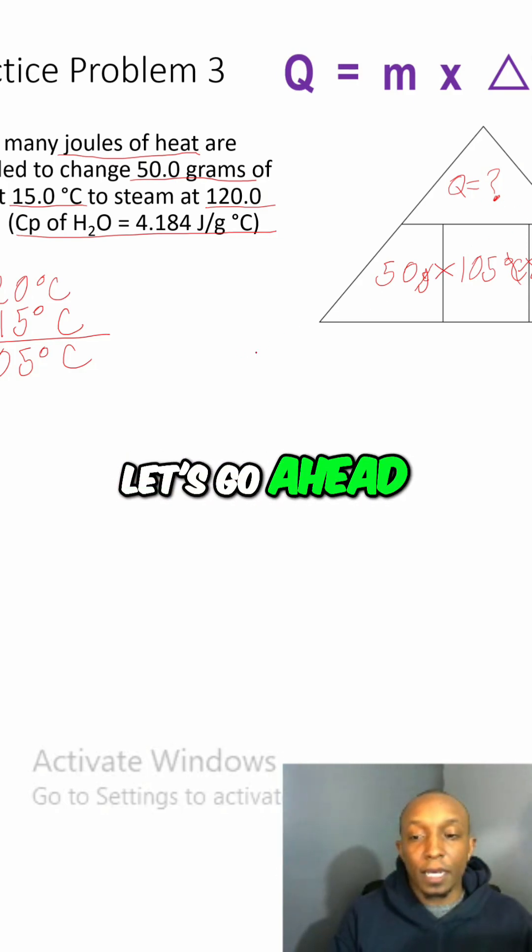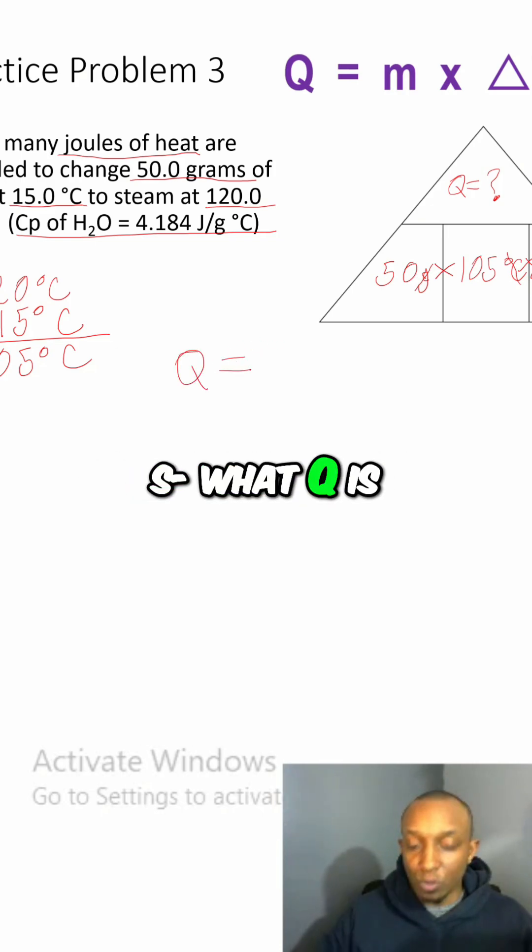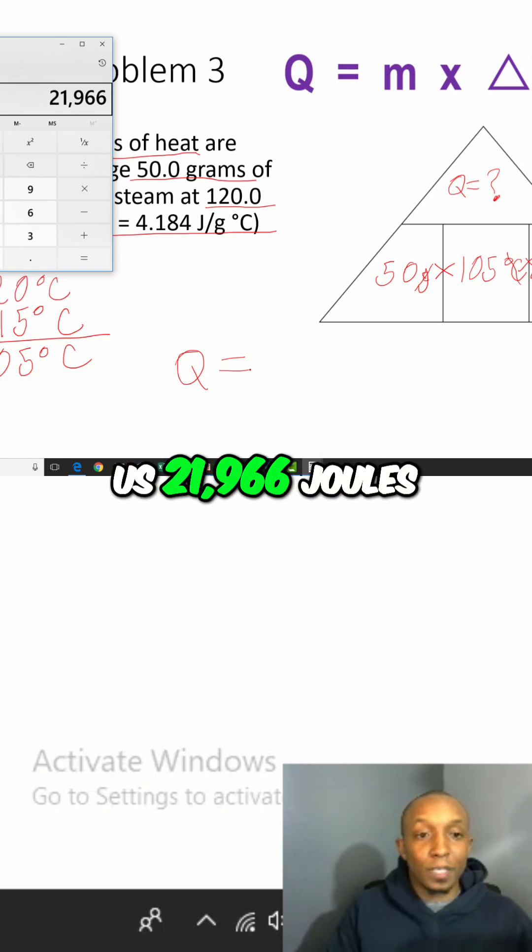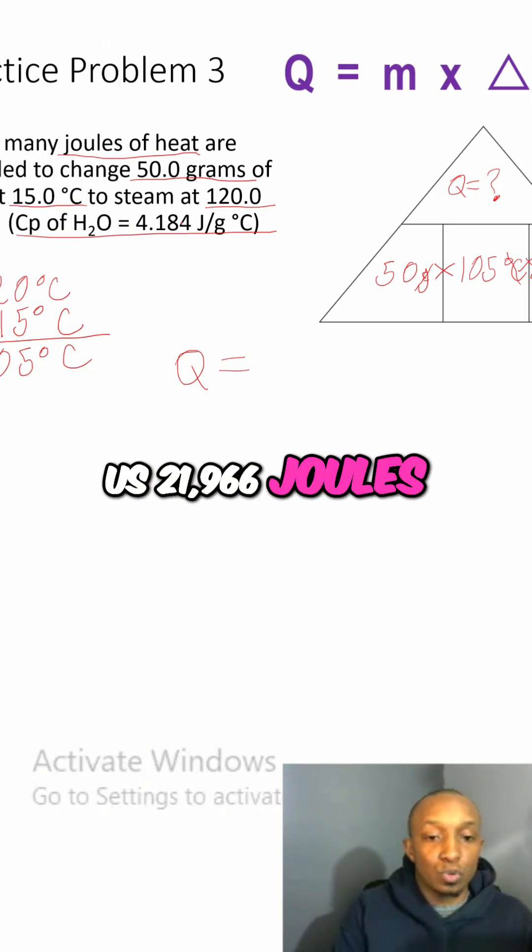So now let's go ahead and put our numbers in our calculators and let's find out what Q is. So 50 times 105 times 4.184, and that's going to give us 21,966 joules.